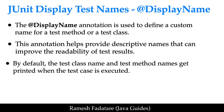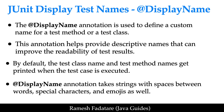By default, the test class name and test method names get printed when the test case is executed. But by using the @DisplayName annotation, we can customize the name of the test method as well as the test class. The @DisplayName annotation takes a string with spaces between words, special characters, and emojis as well — so we can pass a sentence containing special characters and emojis to the @DisplayName annotation.